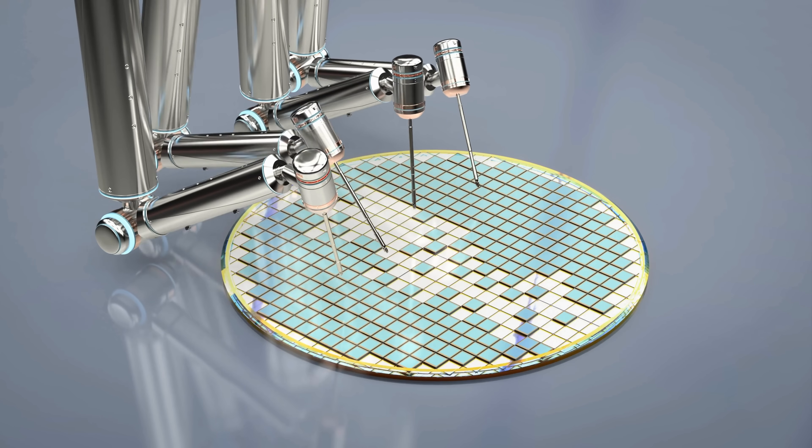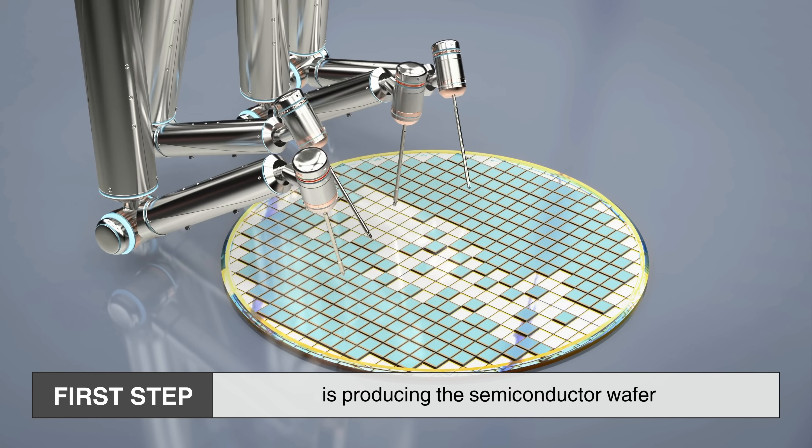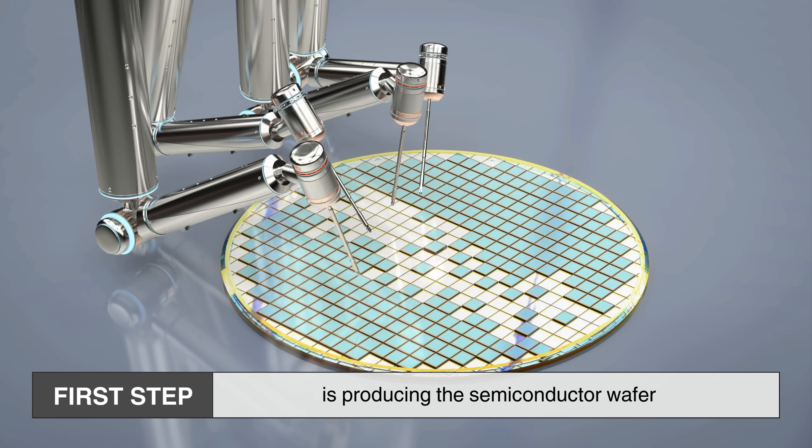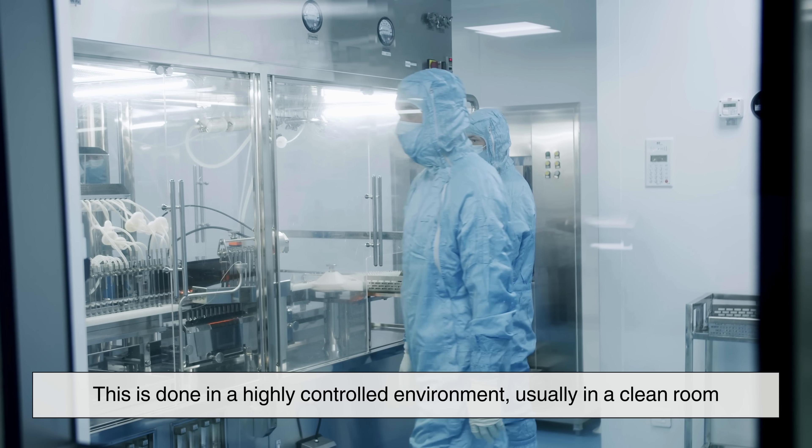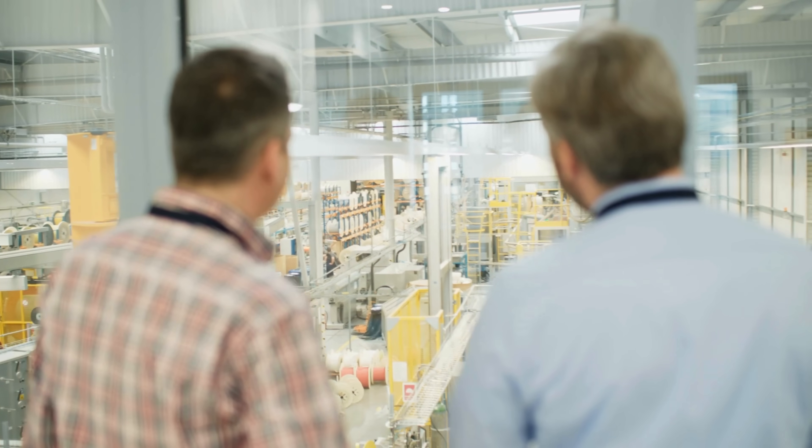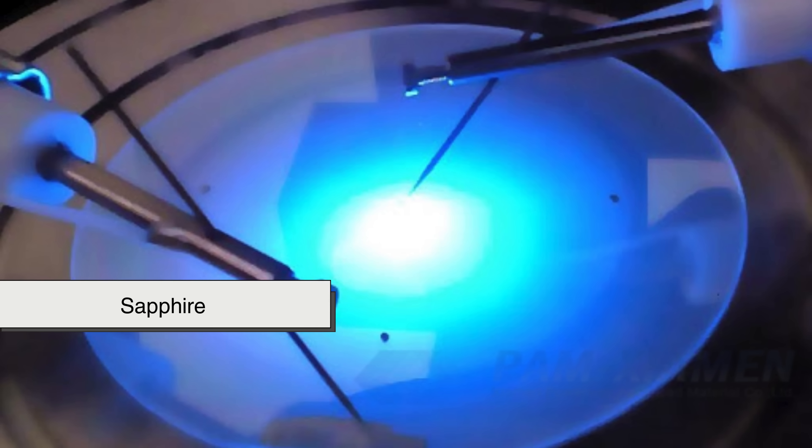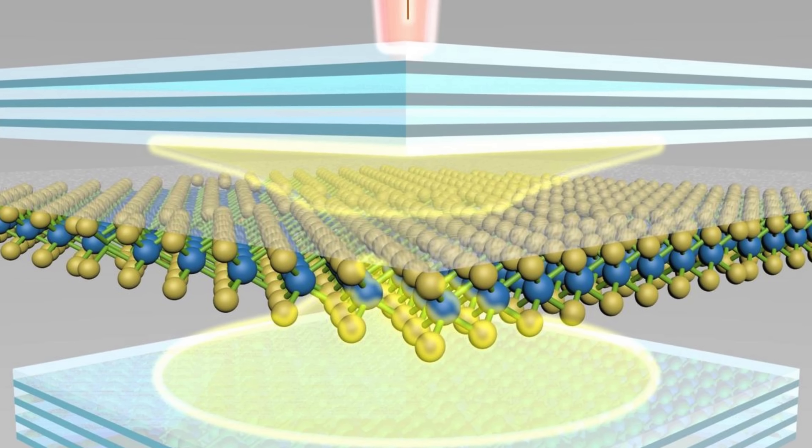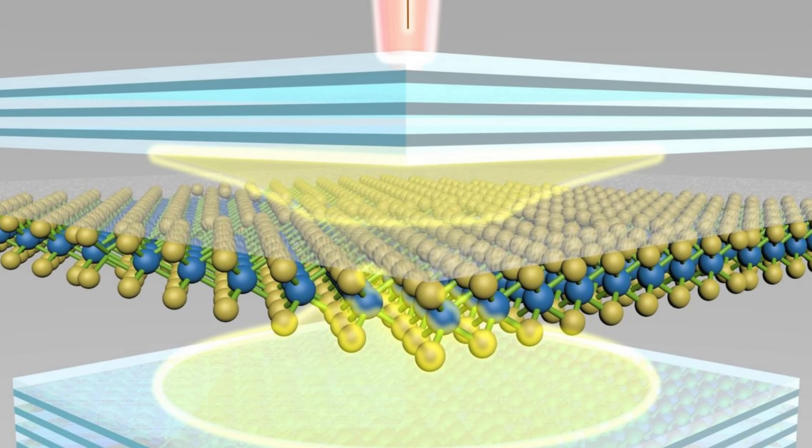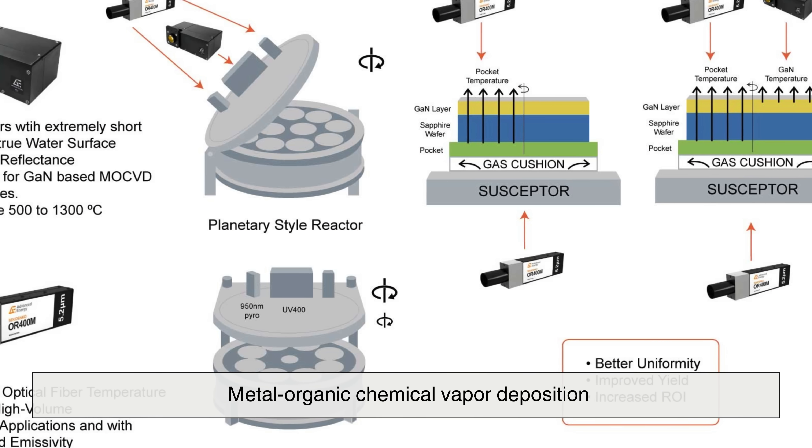The first step in making an LED is producing the semiconductor wafer. This is done in a highly controlled environment, usually in a clean room, where conditions are tightly regulated to prevent contamination. The process starts with a substrate, typically made of sapphire, silicon carbide or silicon. On this substrate, layers of semiconductor materials are grown using a technique called metal-organic chemical vapor deposition.